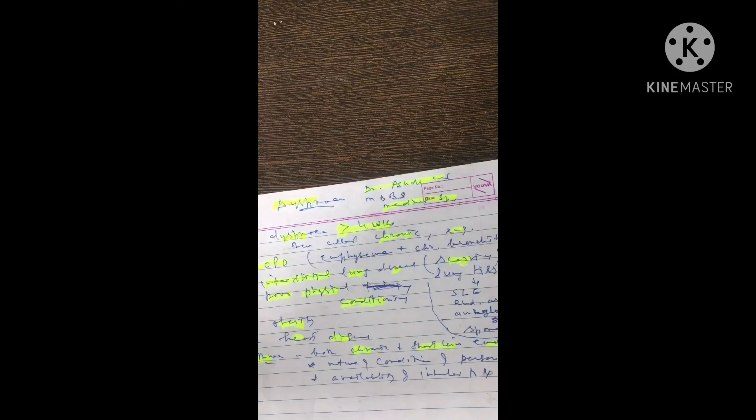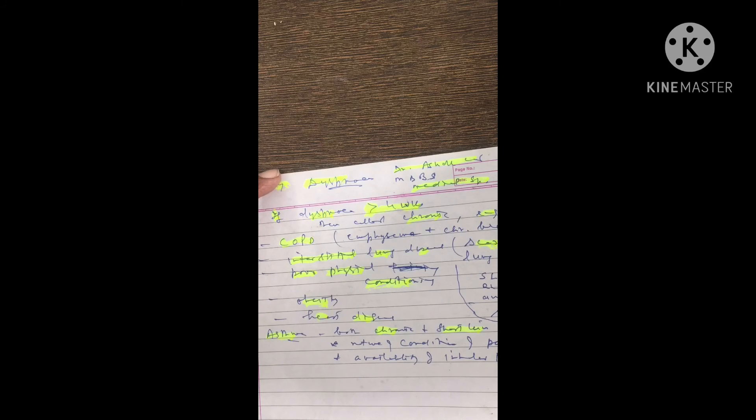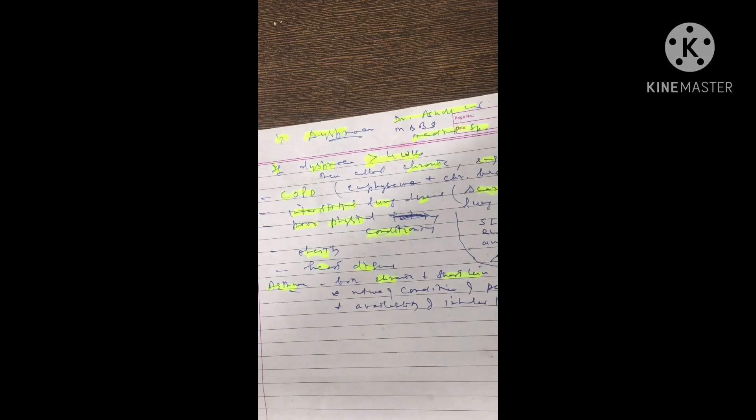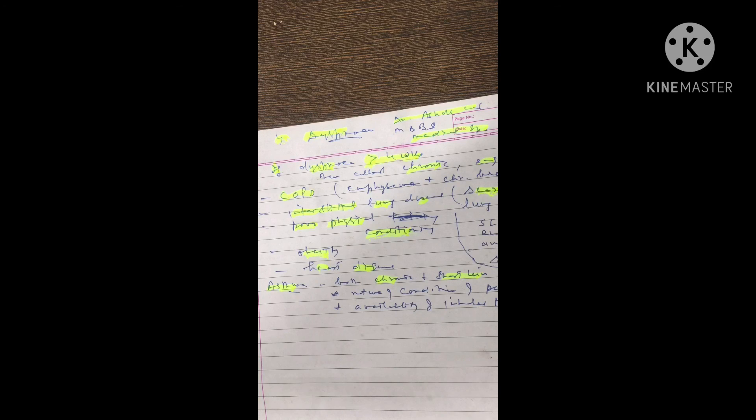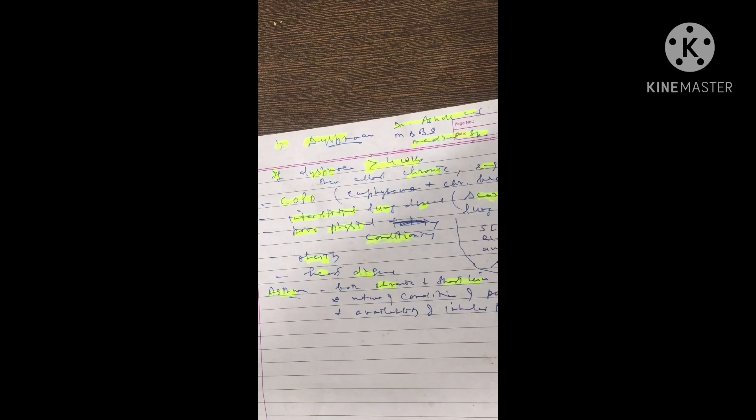If the dyspnea is more than four weeks, then it is called chronic dyspnea. For example, it is found in COPD and emphysema with chronic bronchitis, and interstitial lung disease, that is scarring of the lung tissue, for example in SLE, rheumatoid arthritis, and ankylosing spondylitis. Also obesity and heart diseases. Asthma is both a chronic and a short-term emergency, and it depends on the nature of the condition and availability of the inhaler to treat or give relief to the patient. That is all about dyspnea. Thank you.